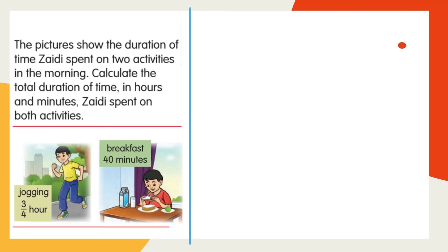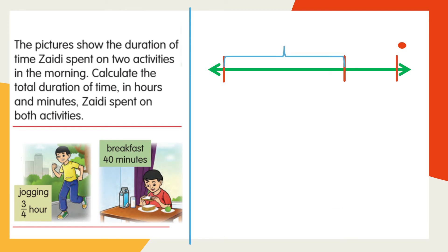Next example: the picture shows the duration of time Zaidi spent on two activities in the morning. Calculate the total duration in hours and minutes Zaidi spent on both activities. Three-quarters of an hour was spent on jogging and 40 minutes spent on breakfast. We need to total the duration of both activities — add three-quarters of an hour plus 40 minutes.